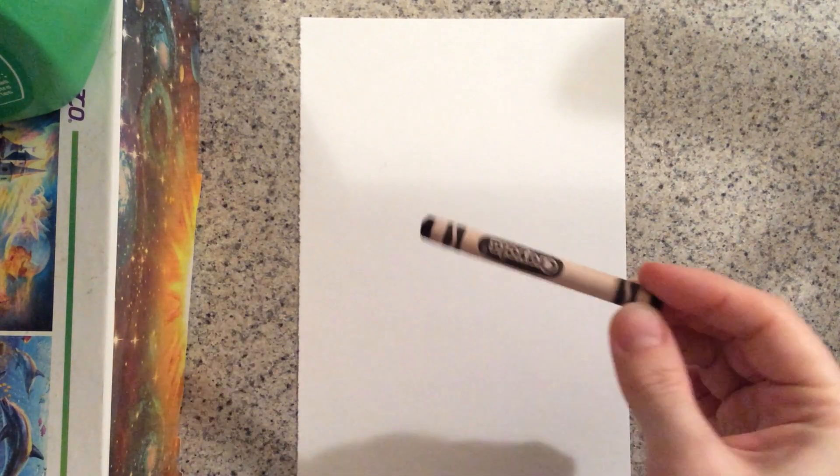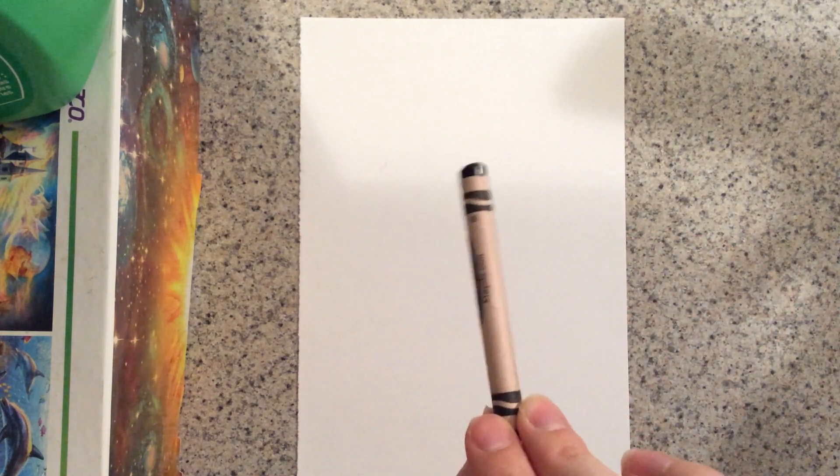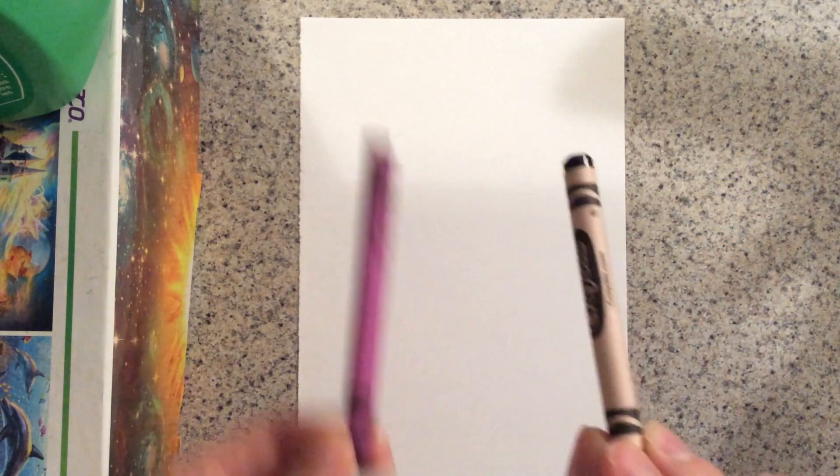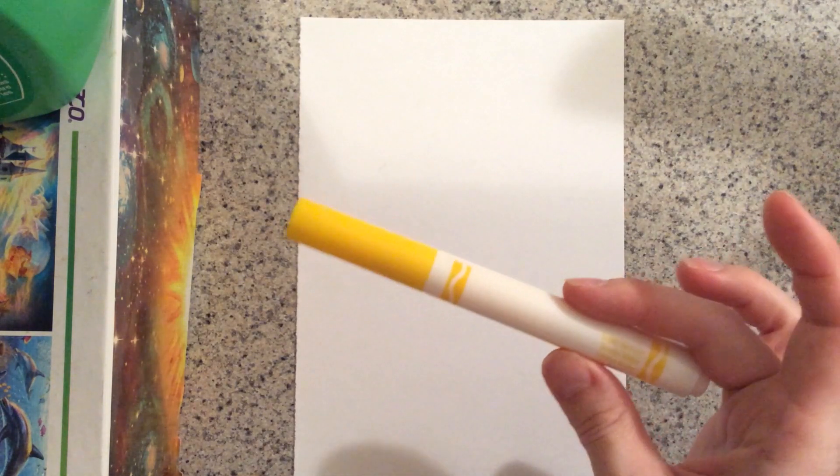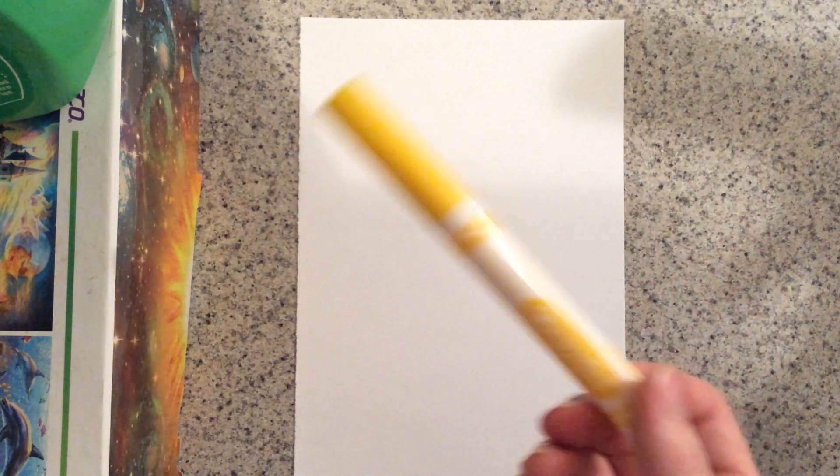All you're going to need is some crayons to work with. Darker the better for this, but light greens will also work. But I always like using a black or maybe a dark purple. And then you need a piece of paper and something to help you press down the crayon with. I'm going to use this marker. If you have a popsicle stick that would be super awesome, but a marker works just fine.